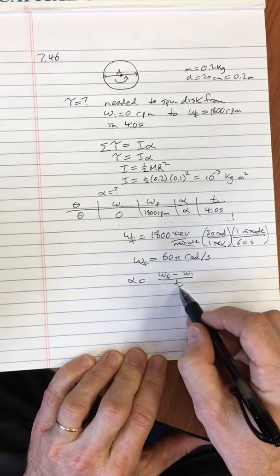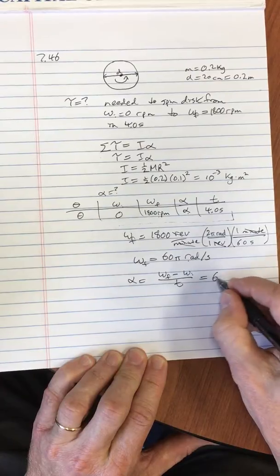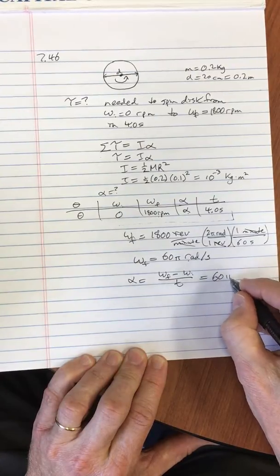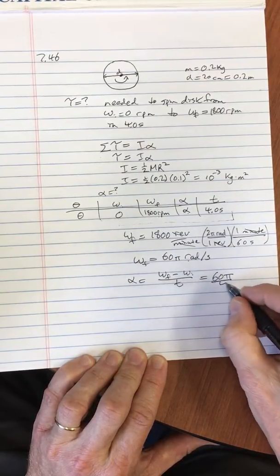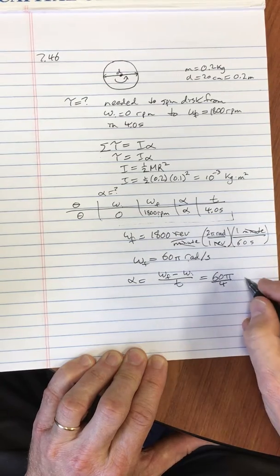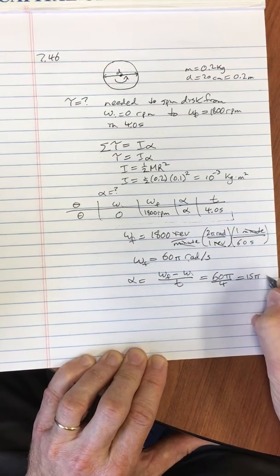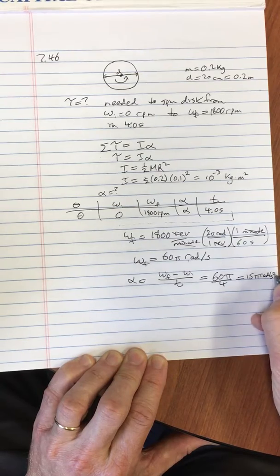Change in velocity divided by the time, so that gives me 60 pi over 4 minus 0, which is 15 pi radians per second squared.